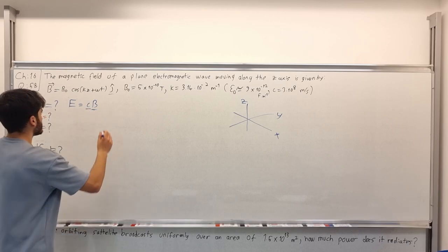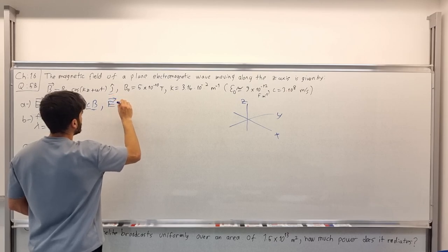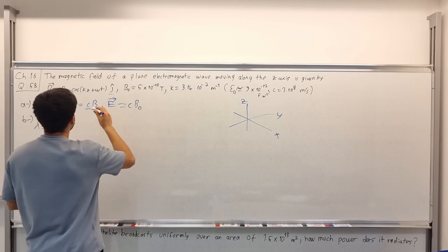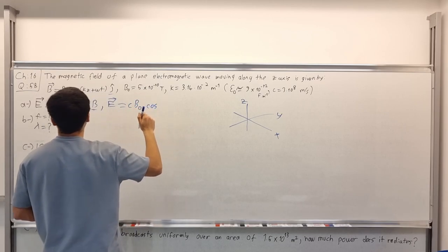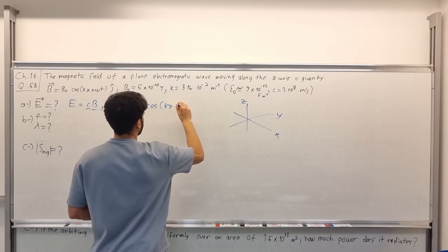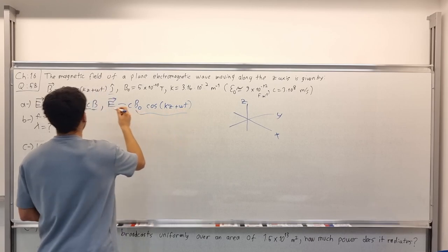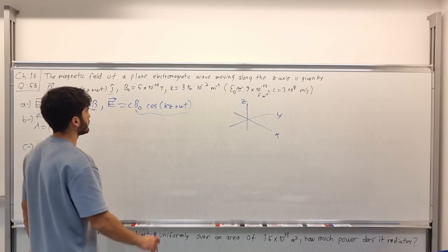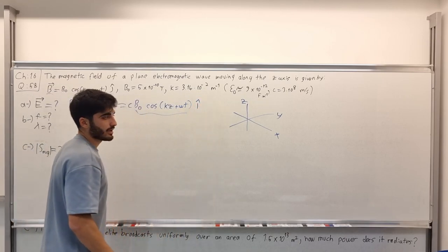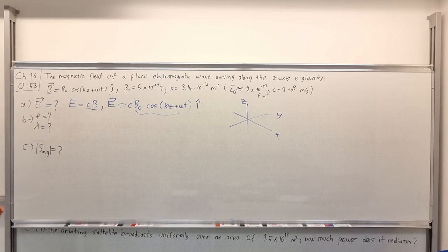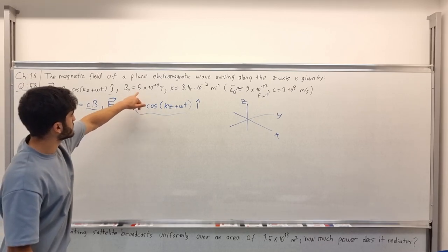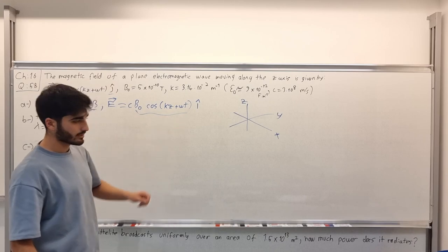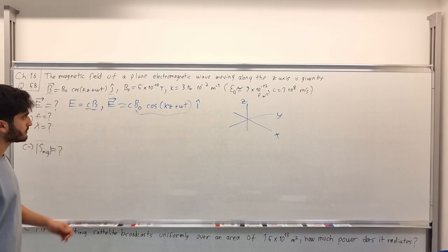Now we know what C and B are, so we can write the electric field vector as E = C × B₀ × cos(kz + ωt) î, where i-hat denotes the direction of the electric field vector. We know what C and B₀ are from the given quantities.